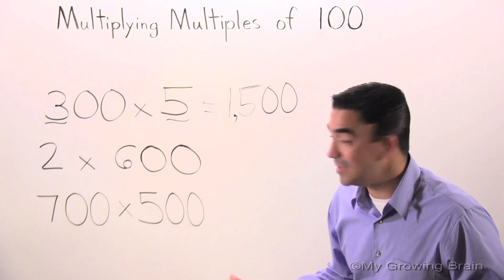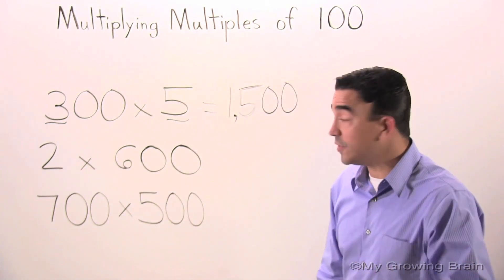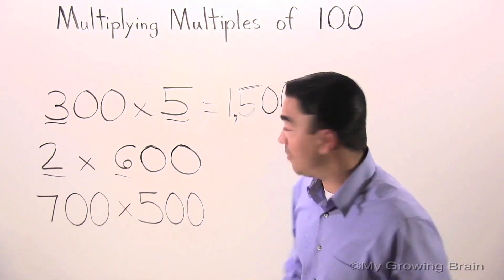Let's go to the next one. 2 times 600. First thing I'm going to do is multiply 2 times 6, which is equal to 12.